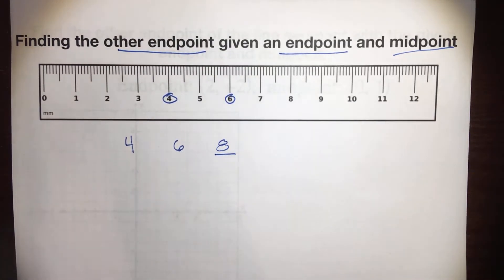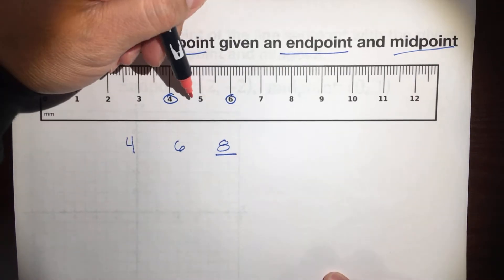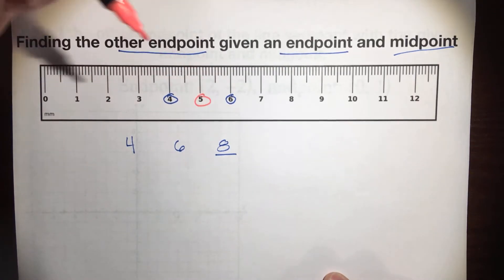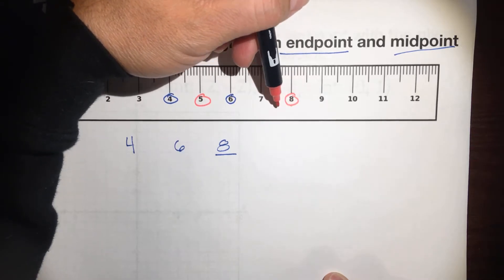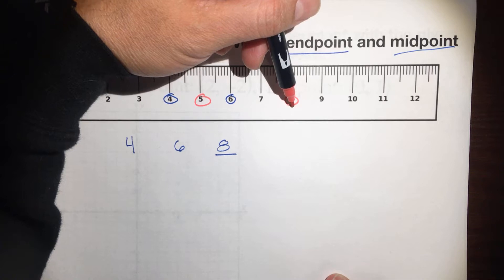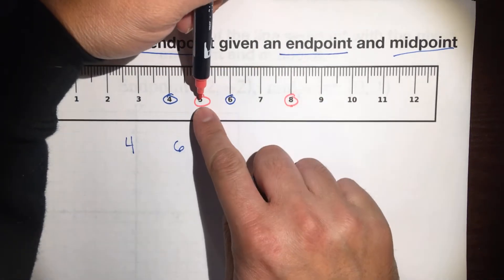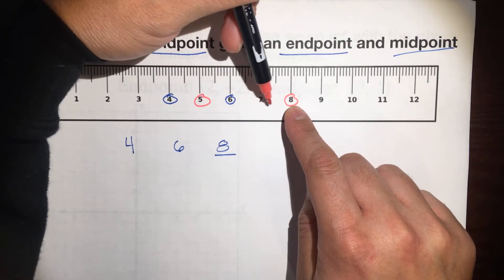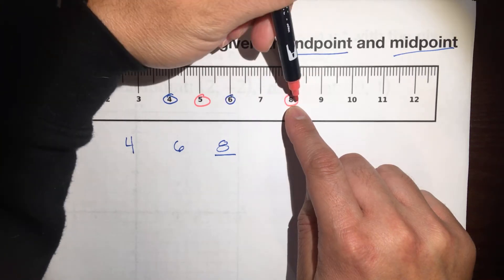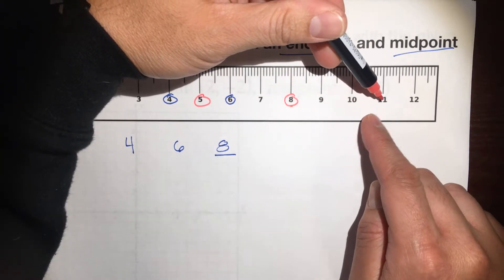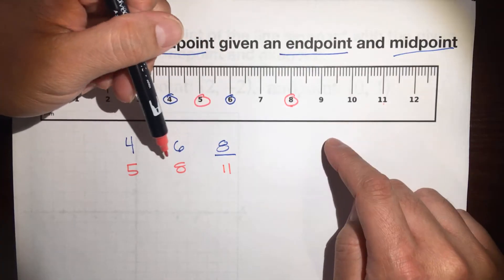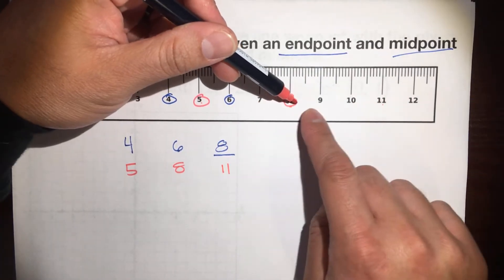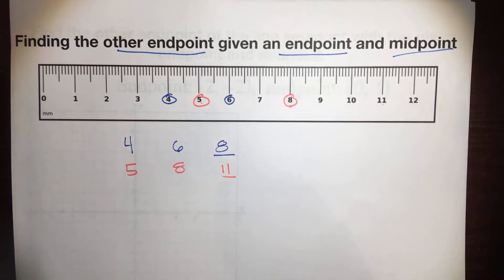Do you get the situation? Let me give you another example. Let's say you are at 5, and we're going to meet in the middle, which is at 8, but your friend is lagging — it's taking a while. Where is my friend at? The distance from you to the meeting point — the midpoint is 1, 2, 3 units. So another 3 units would be at 11, so from 5 to 8 and 8 to 11. The distances between those two are the same, so your friend would be at 11.